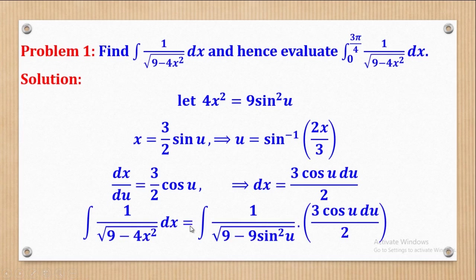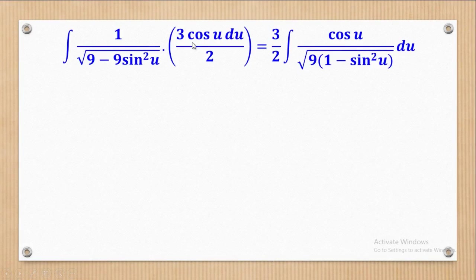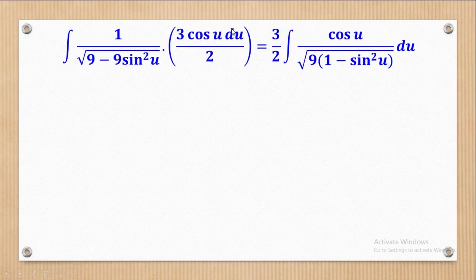Now that we have dx, we substitute. We notice that 4x² has been replaced by 9 sin²(u), and dx has been replaced by (3/2) cos(u) du. The next step is to simplify. Since 9 is common in both terms under the root, it comes out to give 9(1 − sin²(u)). The constants 3/2 come outside, and cos(u) du remains, meaning we are now integrating with respect to u.